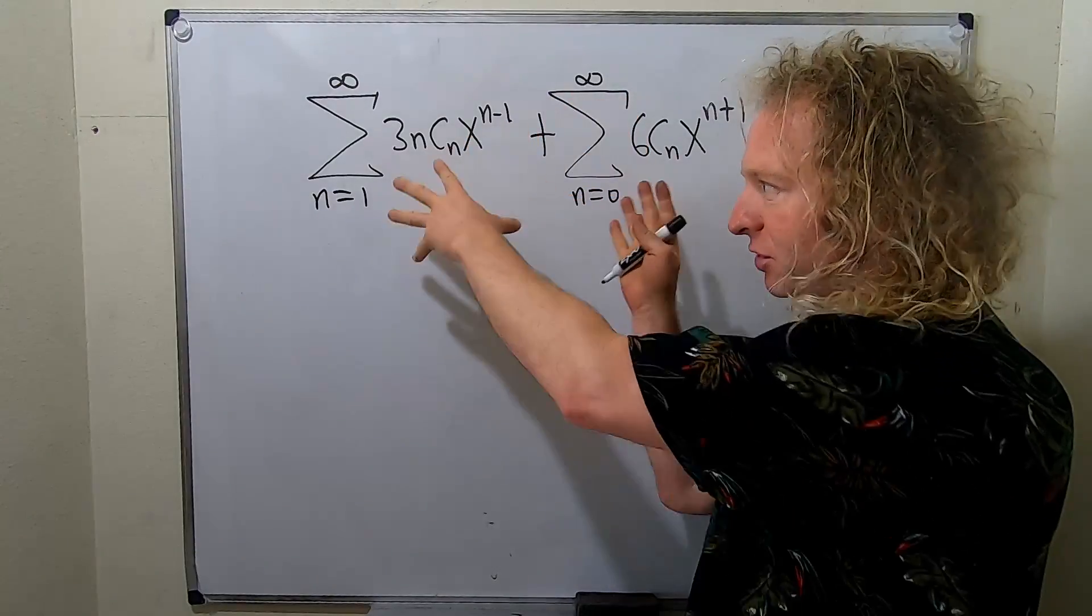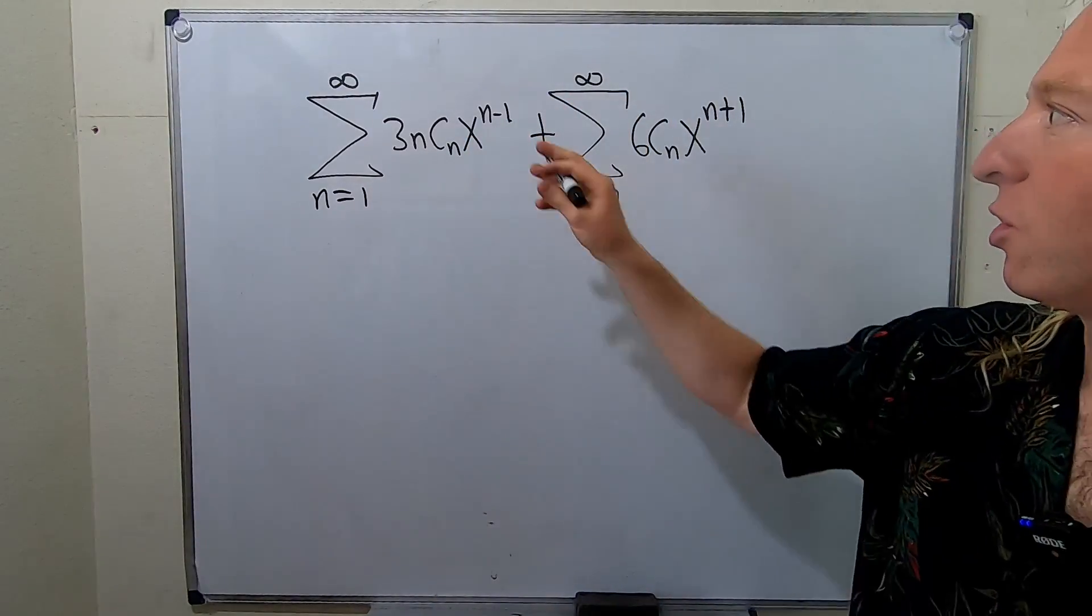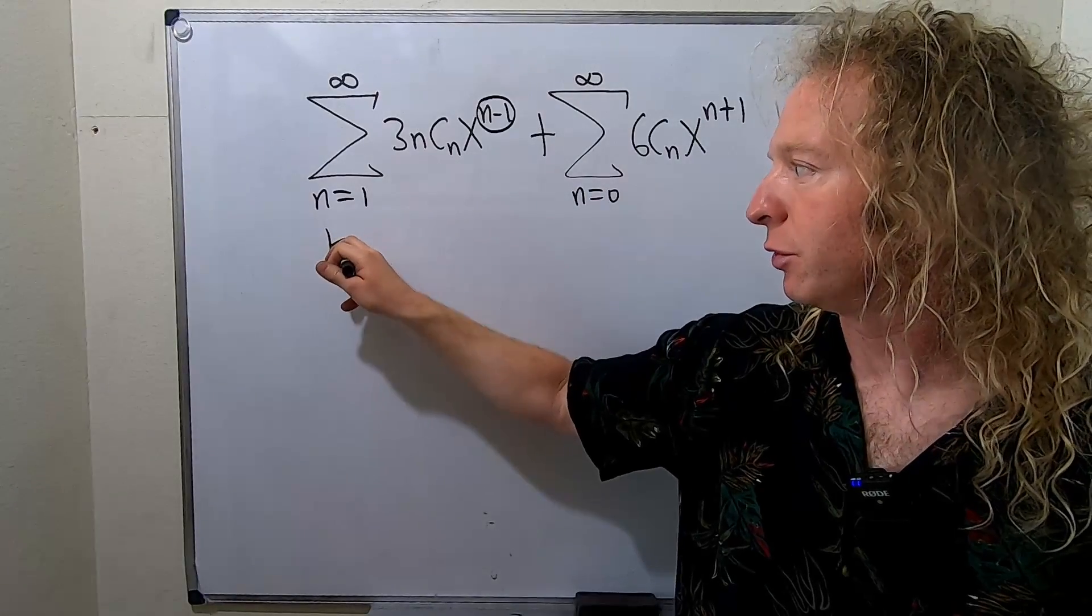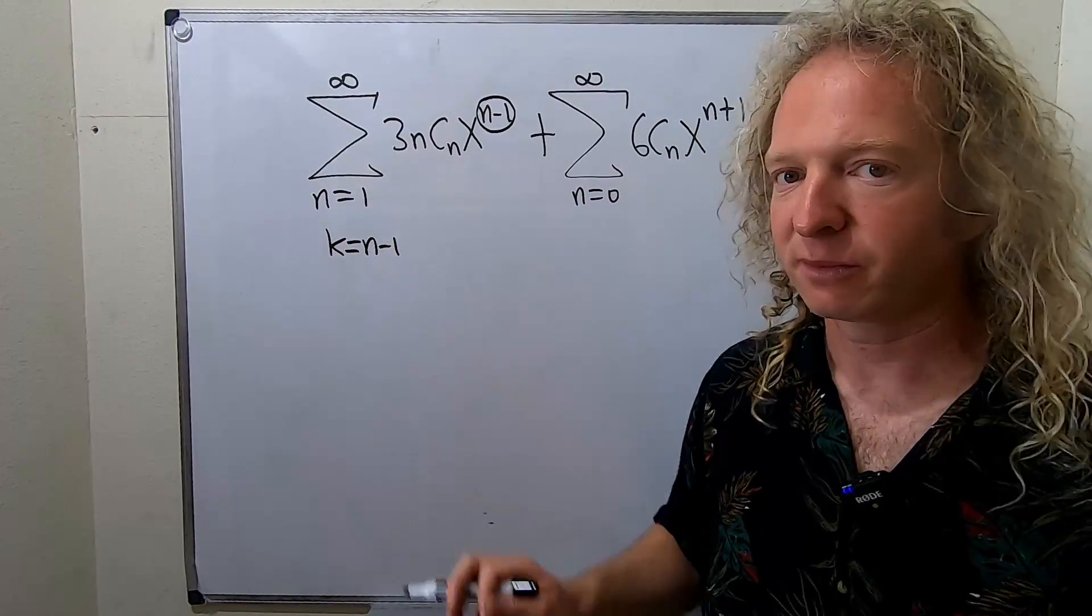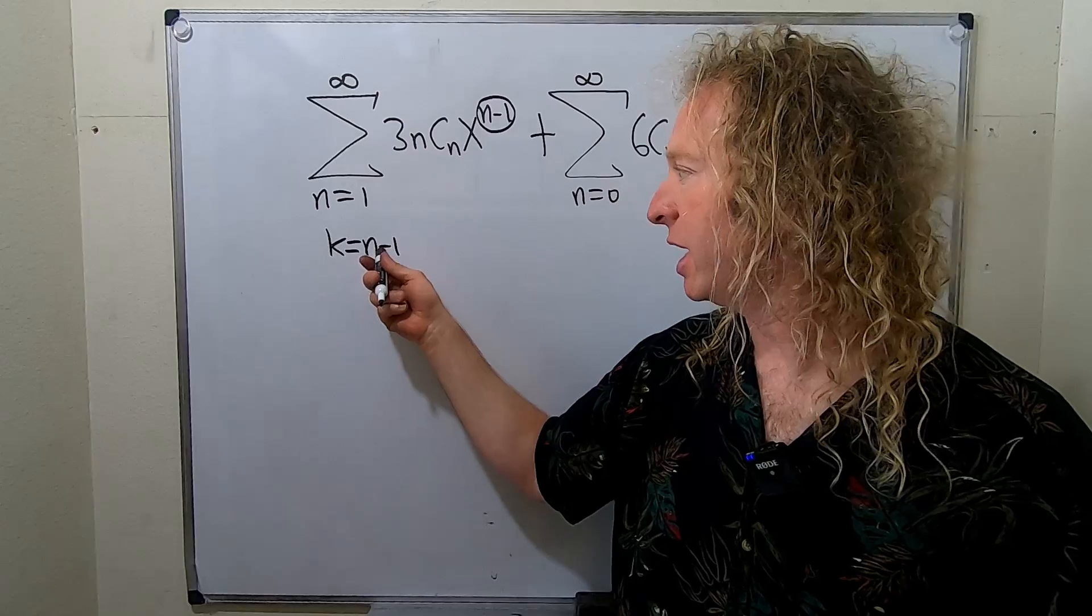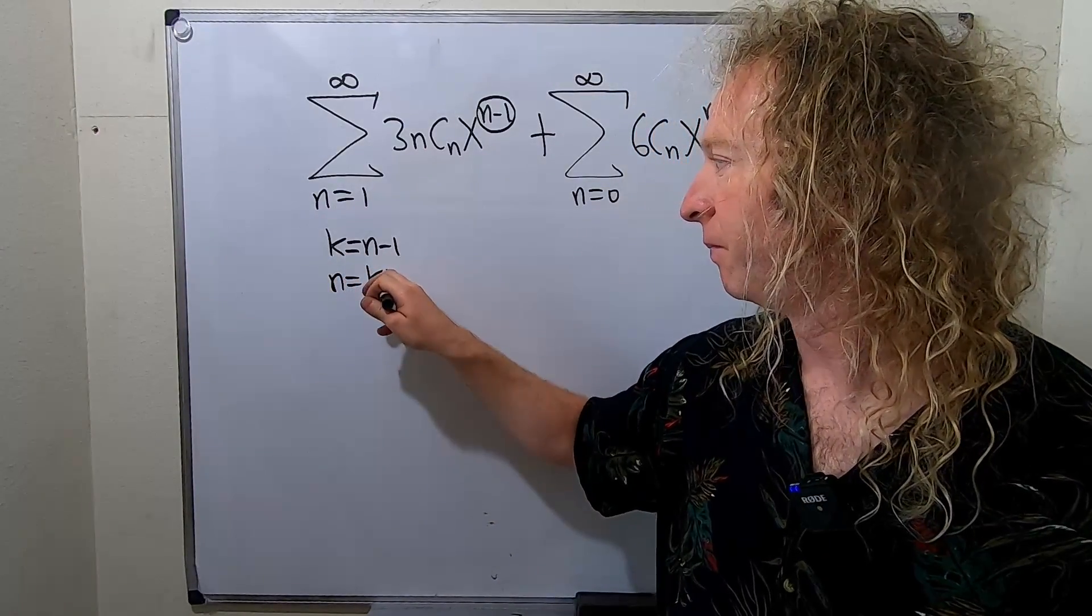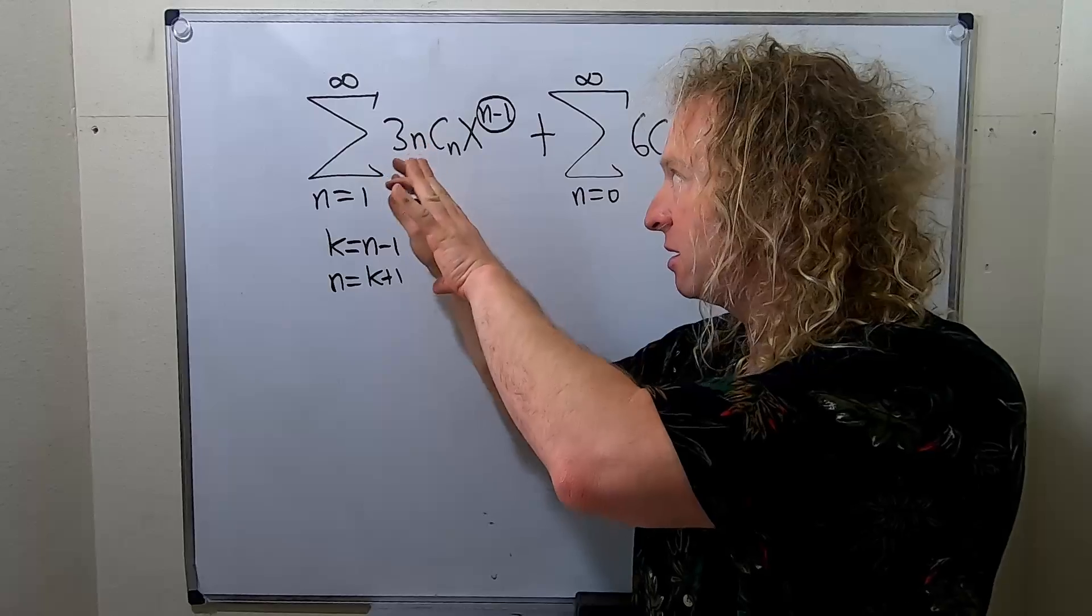The first step when you have a situation like this is to call this piece here k. So you let k be equal to n minus 1. Then you solve for n. So in this case we would add 1 to both sides so n is equal to k plus 1. Now we're going to come back to this in a minute.